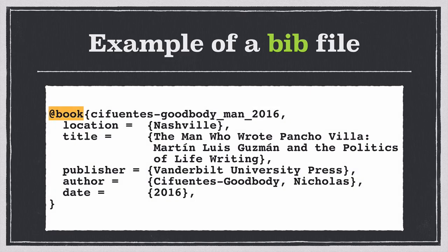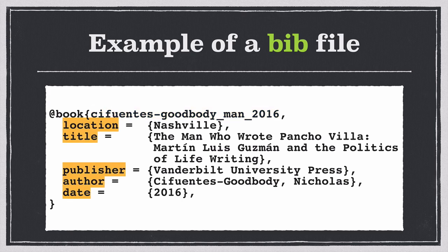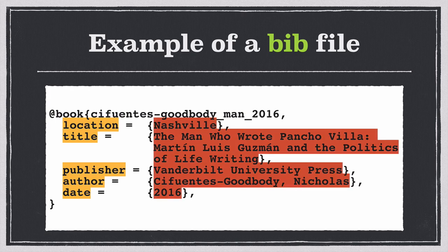There are a few things I want to point out here. First, you can see that the entry begins with an at sign and then 'book', which identifies this source as a book, as a monograph. The next important thing is what's called the cite key — a unique identifier for this particular item. This cite key is a combination of the author's last name, an underscore, the first word of the title, another underscore, and then the year of publication. After the cite key, you can see we have an entry for each important piece of metadata about this source — location, title, et cetera — and the metadata specific to this source is included in curly brackets for each of those items.